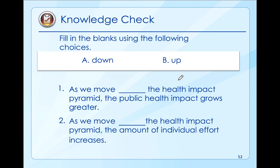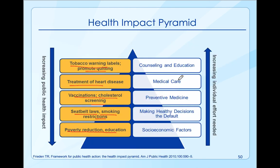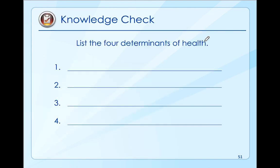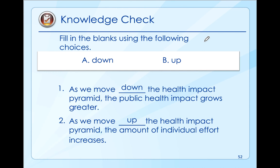Fill in the blanks using the following choices. As we move blank the health impact pyramid, the public health impact grows greater. And as we move blank, the health impact for an individual increases. As we move down the pyramid, the public health impact increases. And as we move up, the individual effort increases. As we move down the impact pyramid, the public health impact grows. And as we move up the public impact, the amount of individual effort increases.